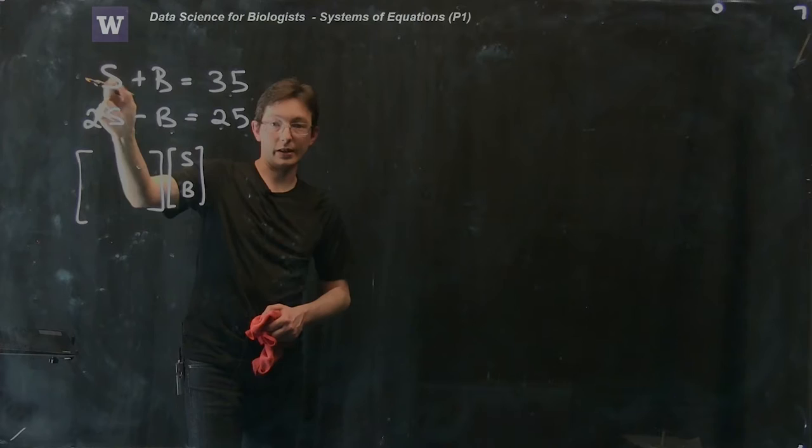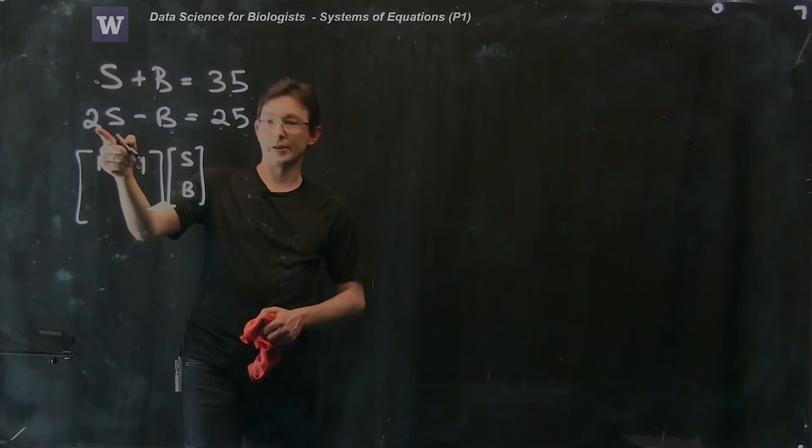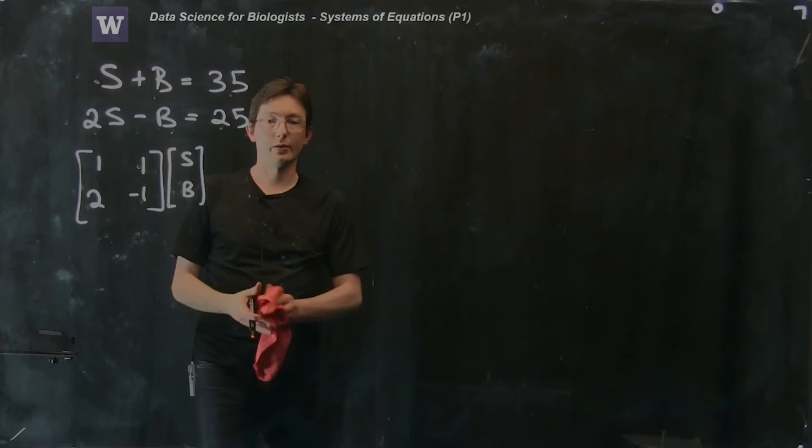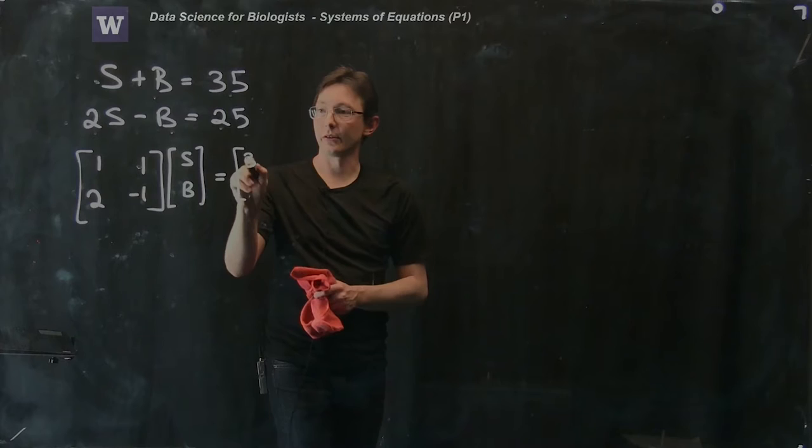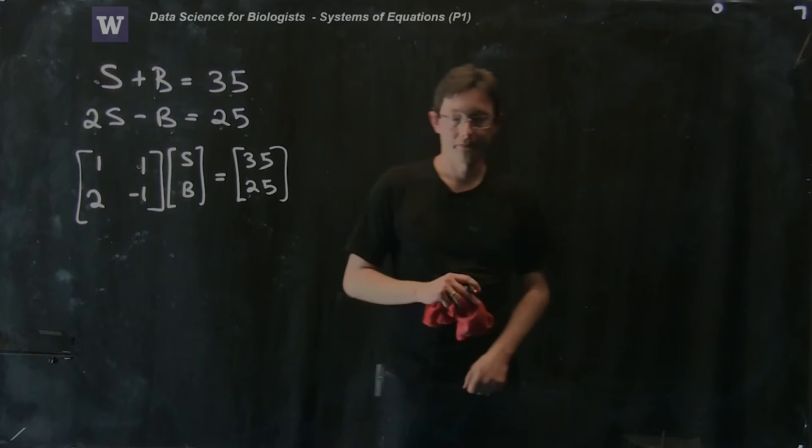The coefficient of Sally in the first equation is one, the coefficient of Bob in the first equation is one, the coefficient of Sally in the second equation is two, and we have minus one Bob in the second equation. So if I multiply these I get Sally plus Bob on the top and 2 Sally minus Bob on the bottom. This is great, and this equals a vector 35 and 25.